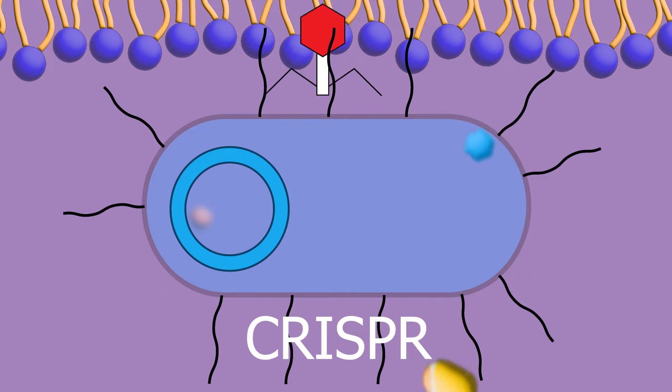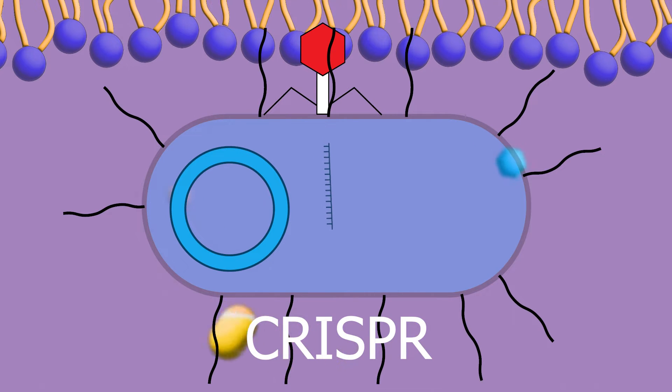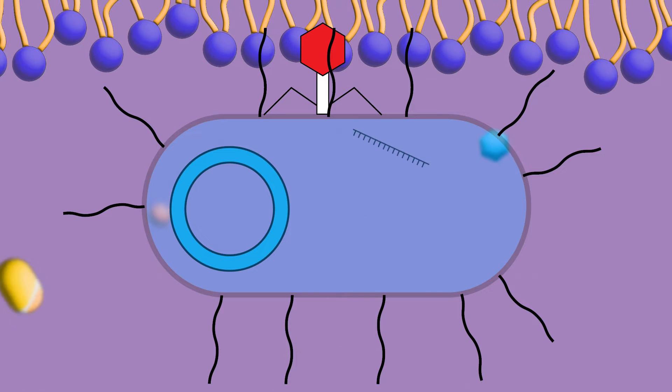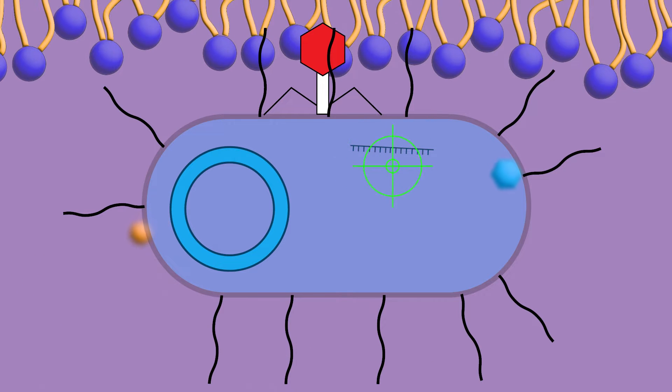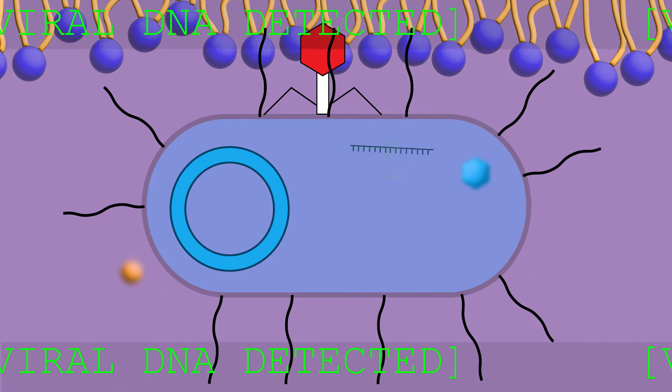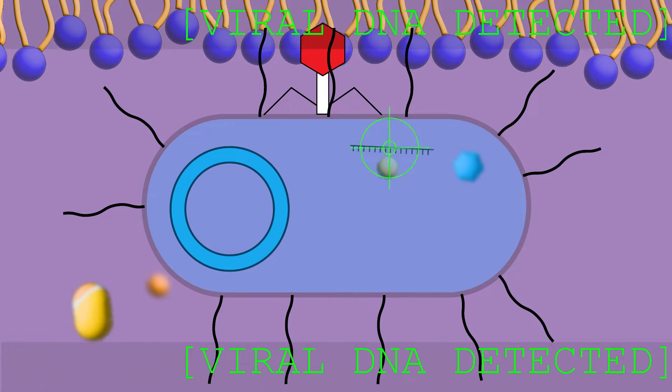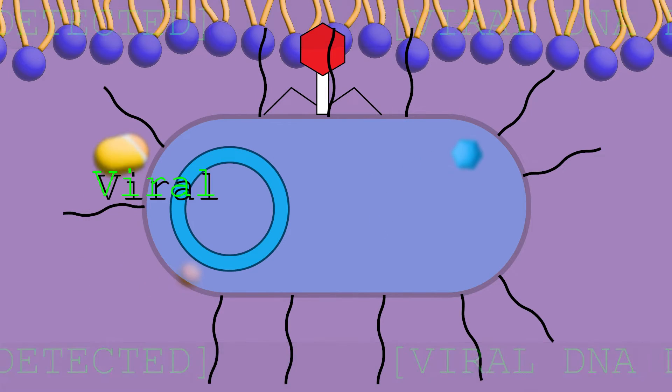CRISPR is a system that bacteria use to fight viral invaders by destroying their DNA. Recently, scientists have figured out how we can hijack that system to make incredibly targeted modifications to DNA sequences, even in humans.